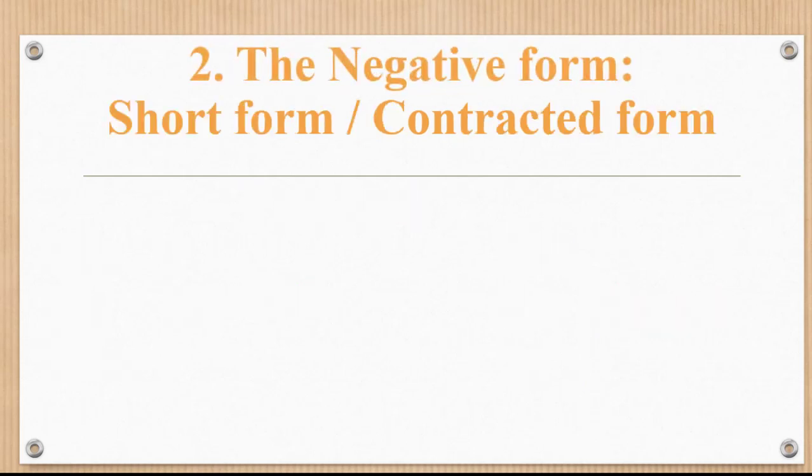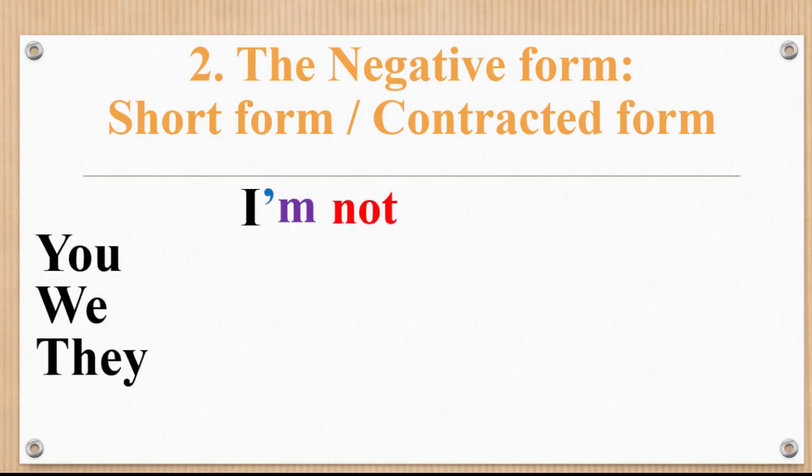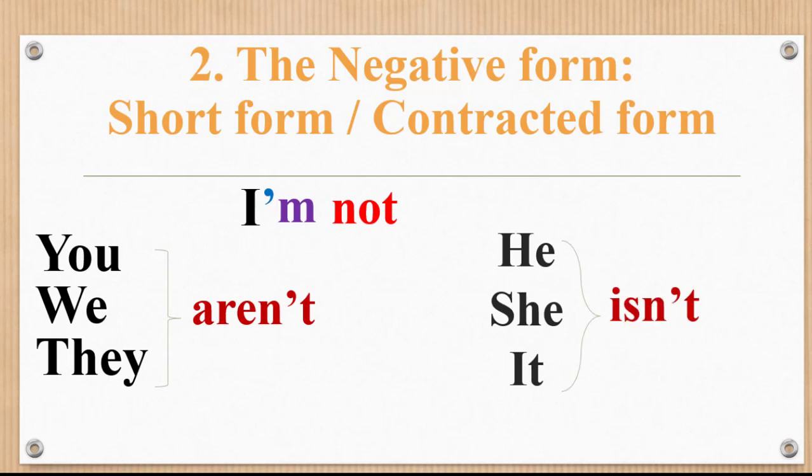Short form or contracted form with the negative: I'm not. You aren't, we aren't, they aren't. He isn't, she isn't, it isn't.